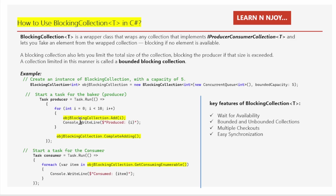That is what I have written: objBlockingCollection.Add(i). And whatever I have added, I am writing into the console window what I have produced. Then I have written objBlockingCollection.CompleteAdding(). This method is called after all items are produced — it signals that no more items will be added to the collection.